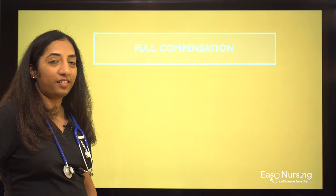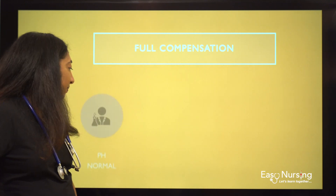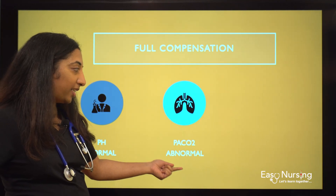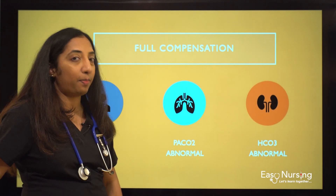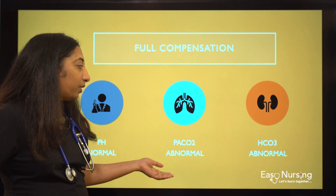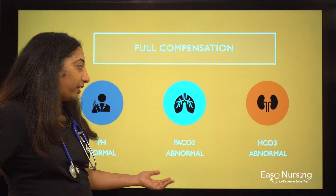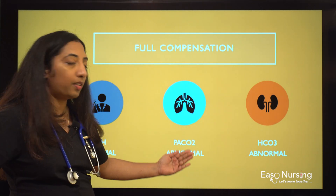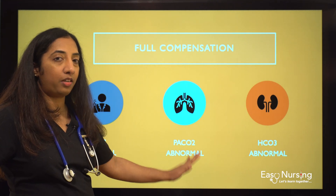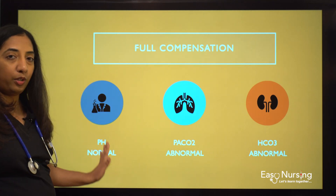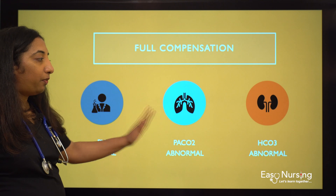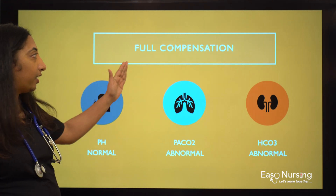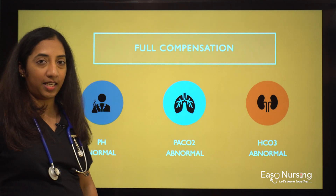For full compensation, we have a normal pH but PaCO2 and bicarb are both abnormal. What would have happened is we had an abnormal pH and one of these values increased or decreased to bring that pH back to normal — and when that happened, the pH came back to normal. That means it is fully compensated.